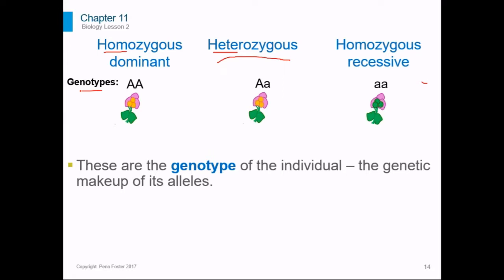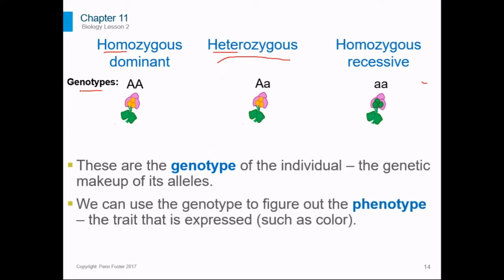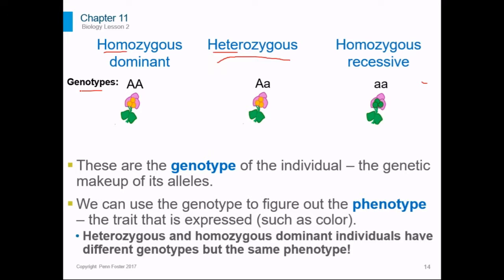But we could use the genotype to figure out the phenotype — that's the trait that is expressed. You should notice that the heterozygous and homozygous dominant individuals have different genotypes but the same phenotypes.